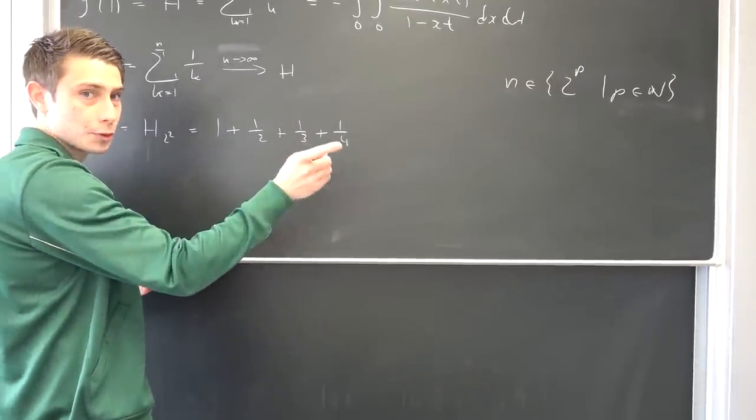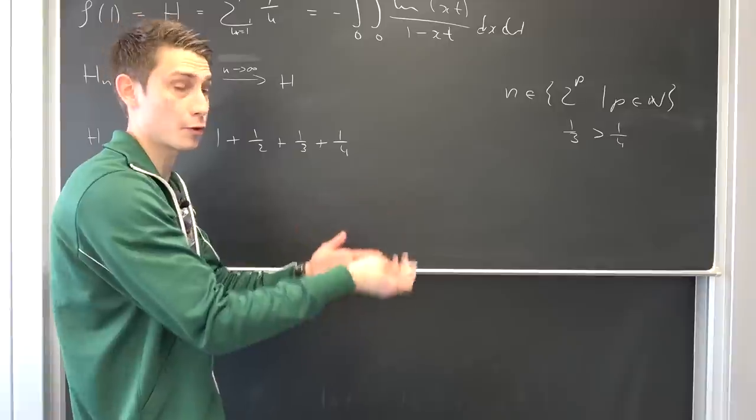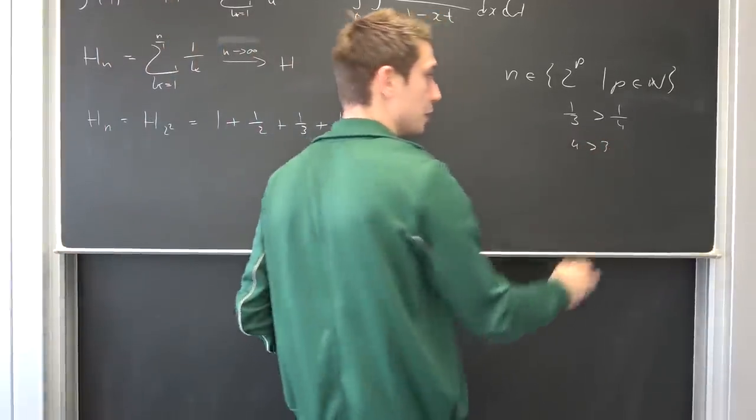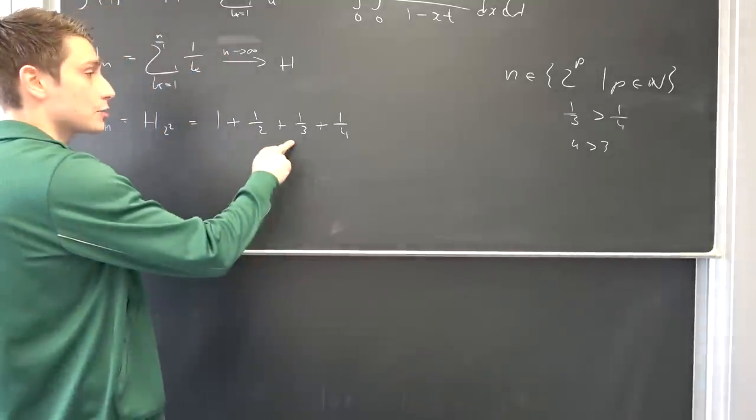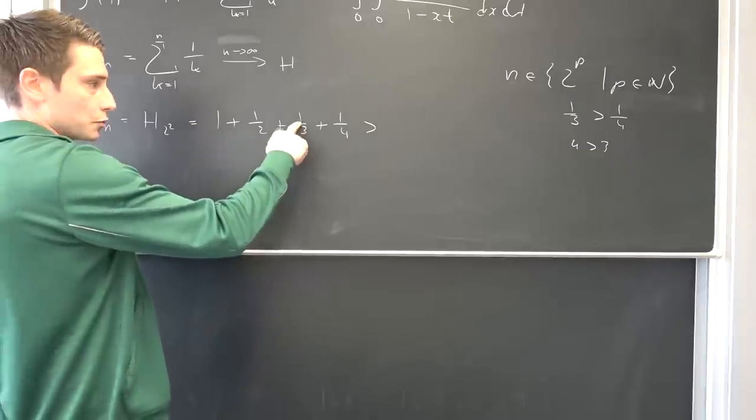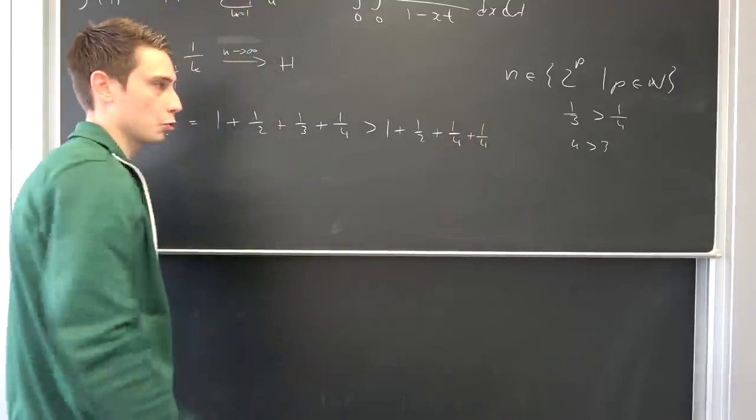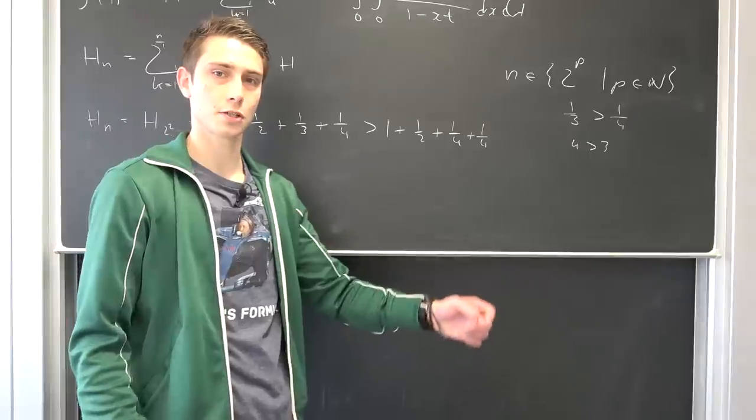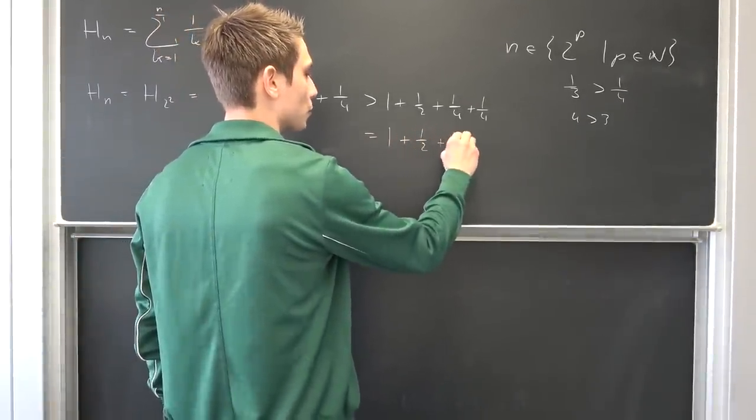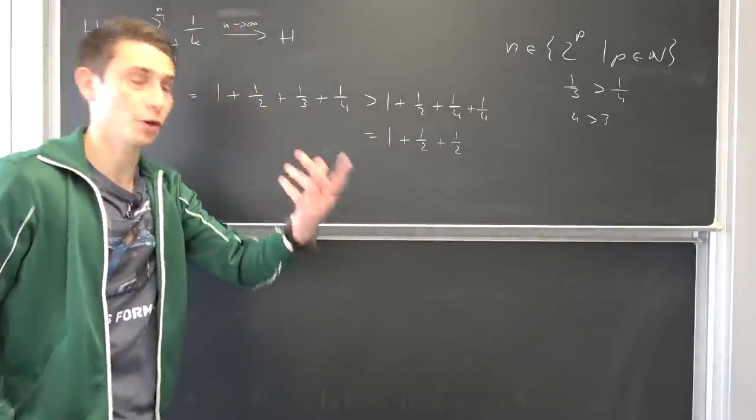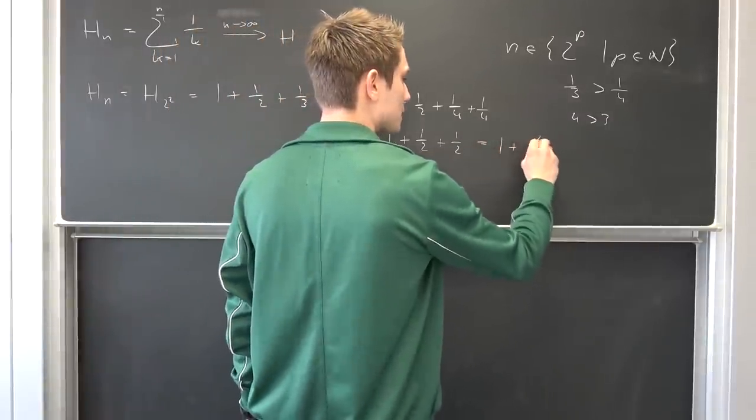1/3 is indeed strictly greater than 1/4 because you can multiply both sides by 3 and 4 to arrive at 4 being greater than 3. So this thing is actually strictly greater than 1 plus 1/2 plus 1/4 plus 1/4. 1/4 plus 1/4 is 2 over 4, that's 1/2. That's nothing but 1 plus 1/2 plus 1/2. This is 2, but I want to write it in a different way: 1 plus 2 over 2.